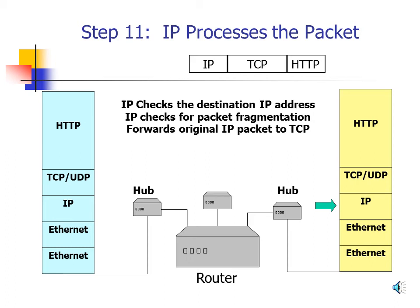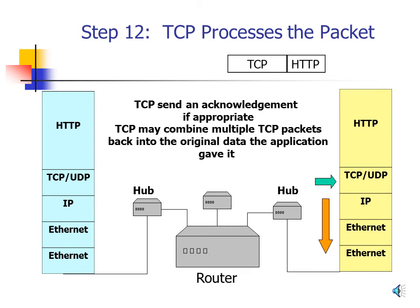Step 12: TCP Processes the Packet. TCP receives the packet and sends an acknowledgement back to the sending computer — though depending on its configuration, it may wait for multiple TCP packets before sending an ACK. To send the acknowledgement, TCP creates a TCP ACK packet, hands it to IP, which addresses it to the originating computer; ARP retrieves the proper MAC address; an Ethernet header is added; and the TCP acknowledgement is sent back. All received TCP packets must be acknowledged in this process.